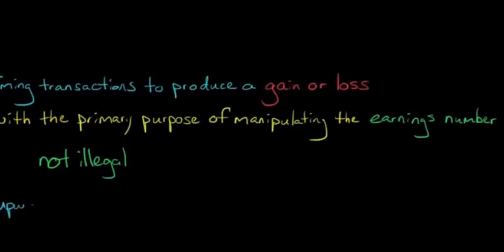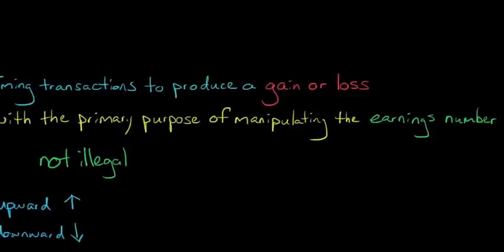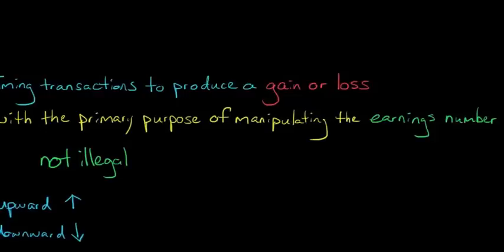Managing earnings or massaging the numbers could take place upward, where you try to increase earnings. But in some cases, firms engage in downward earnings management. This might seem counterintuitive. Why would a firm want to make its earnings smaller? Well, if the firm had an exceptionally good quarter and met its target at a certain threshold, it might take the extra earnings and put them in what we call a cookie jar. So you hear this idea that the firm has cookie jar reserves - they're basically putting it away for a rainy day.